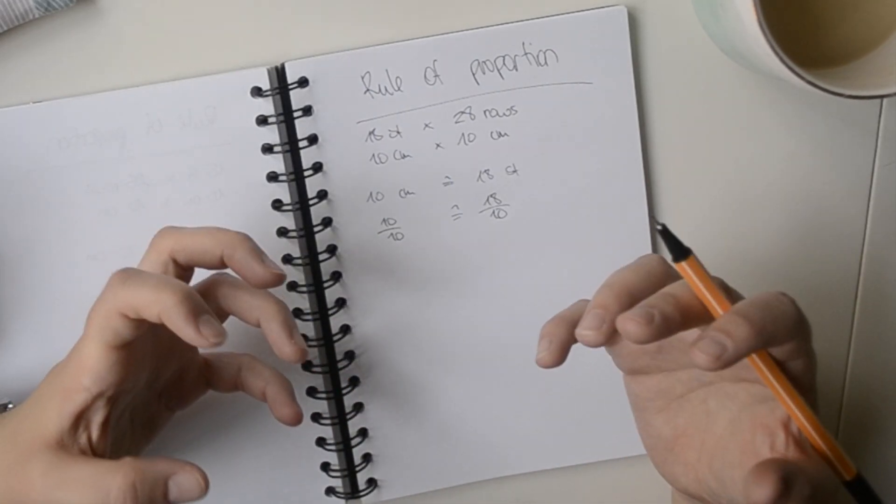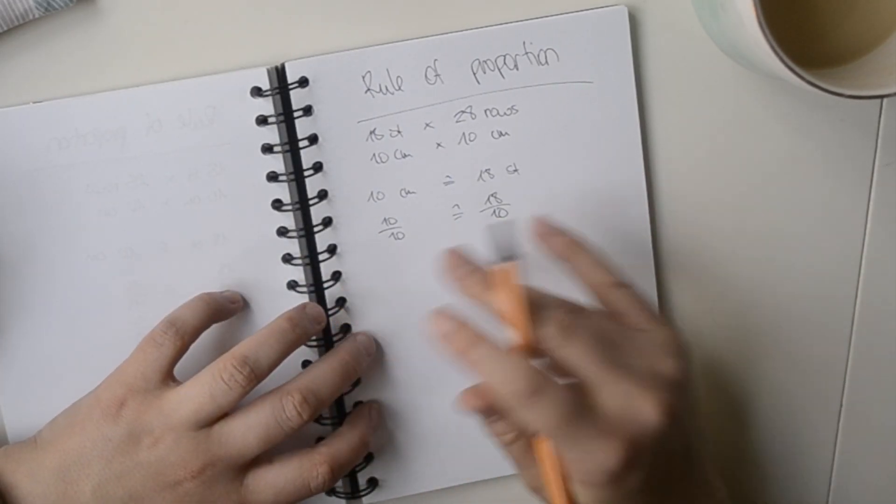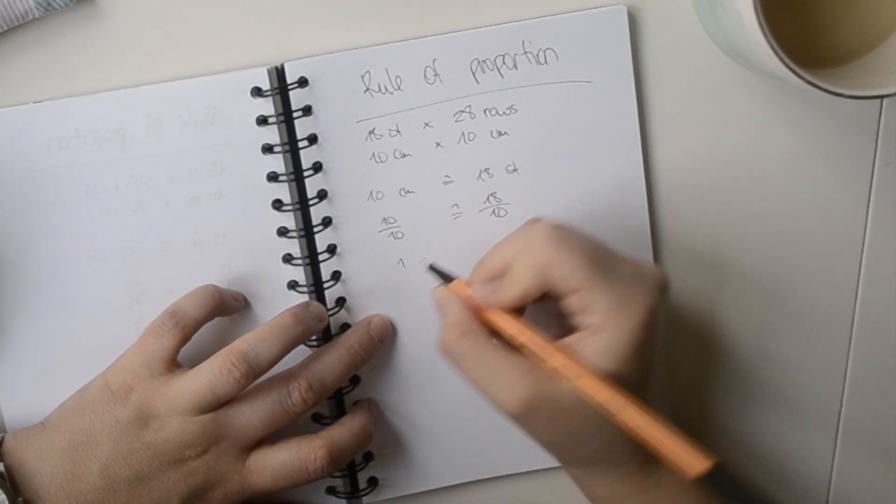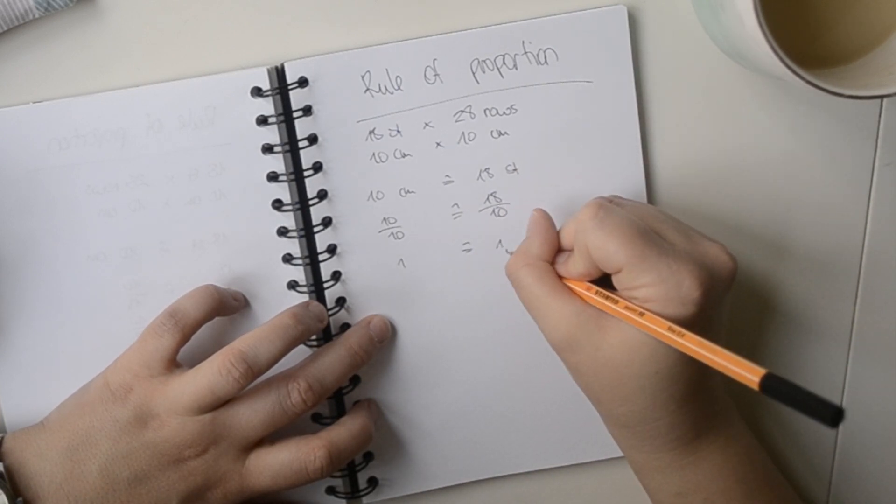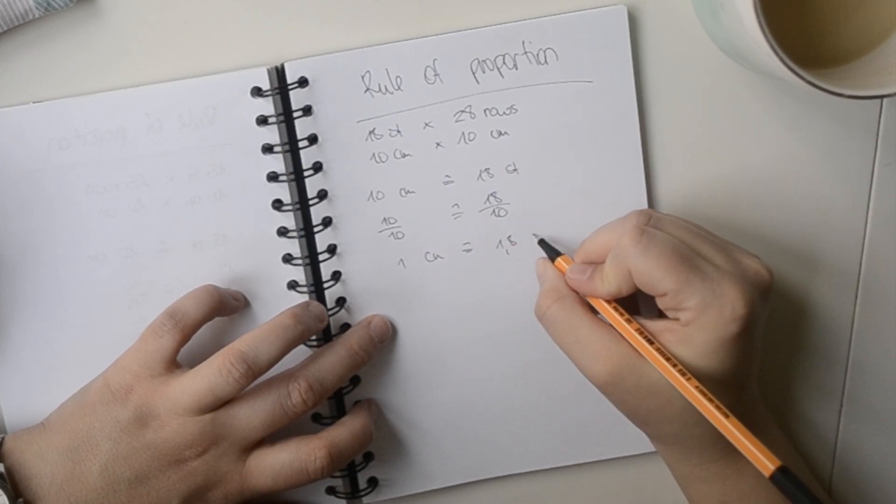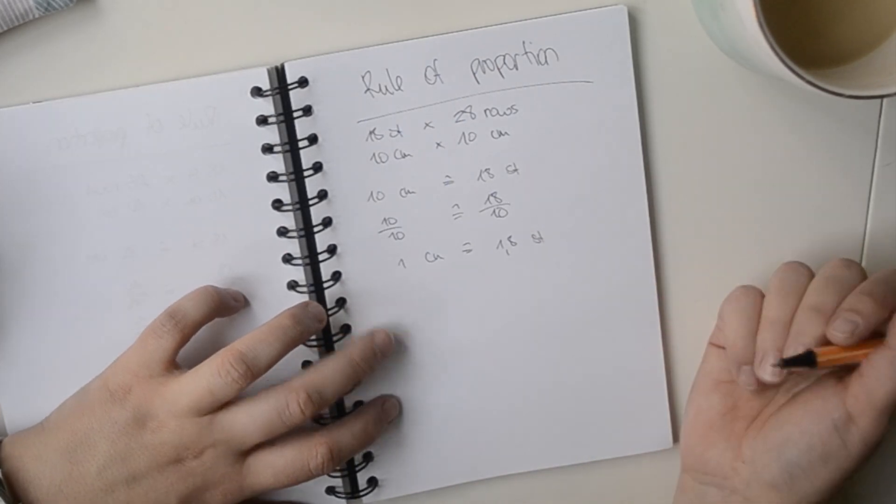And then the equation would still be correct because you still would have the same value on both sides. And 10 divided by 10 is 1, and 18 divided by 10 is 1.8. So now we know that 1 cm equals 1.8 stitches.